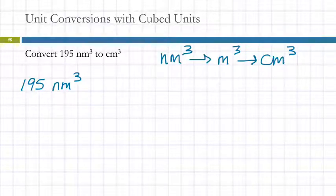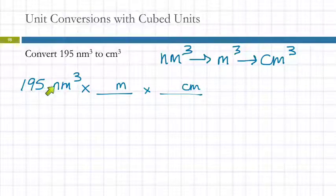Two conversion factors because I have two arrows. There's one. There's two. Again, we're just going to ignore the cube at first. Nanometers to meters. So I've got nanometers here. I'm going to put meters in here. And then I'm going to go to centimeters. So centimeters goes up there. This nanometer unit comes into the denominator. And meters is in the denominator down there.